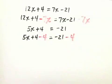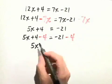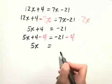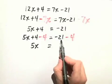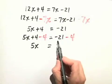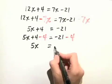When we simplify, on the left, we just have 5x because the plus 4 and minus 4 add up to 0. Equals, on the right-hand side, negative 21 minus 4 is just negative 25 because it's like negative 21 plus another negative 4.